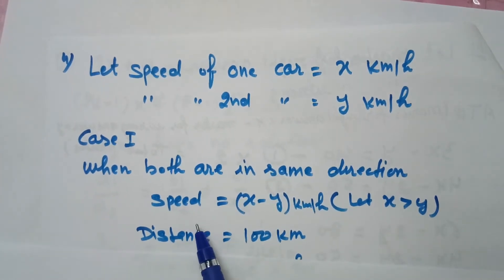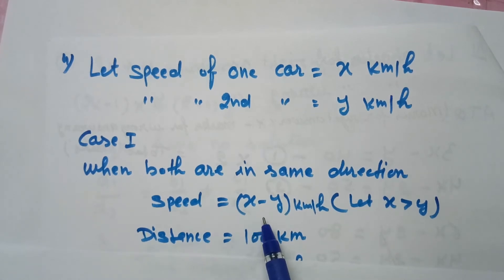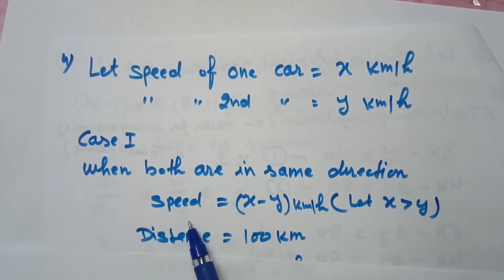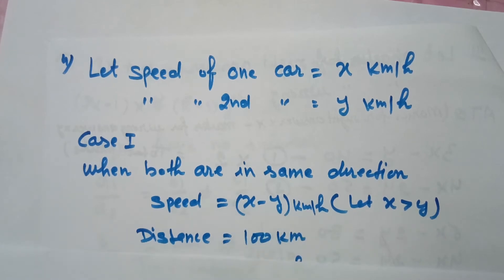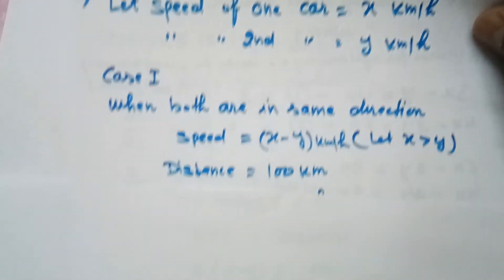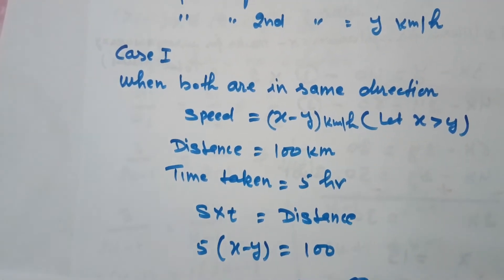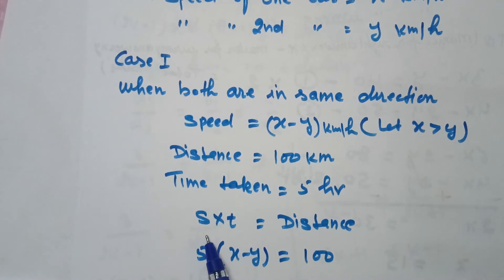In this case, the average speed of both cars will be the difference of speeds: (x-y) km/h. Distance is 100 km and time taken is 5 hours. We use the formula: distance equals speed times time.